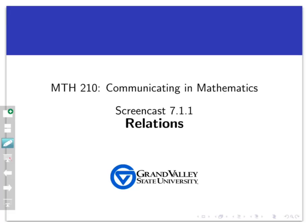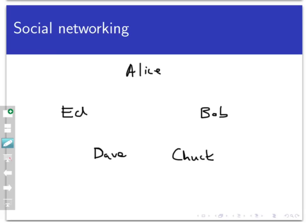Let's develop the idea of a relation by looking at a very small social network. This network consists of five people: Alice, Bob, Chuck, Dave, and Ed. They're on a social network that allows one person to follow the posts of another. If one person follows another, then the person being followed does not have to follow the other person back. Let's suppose that the network currently looks like this.